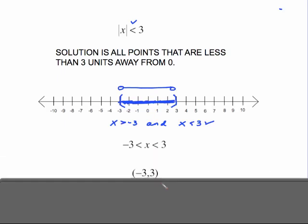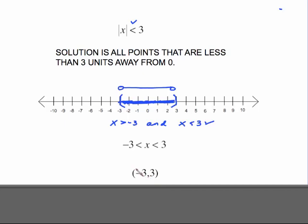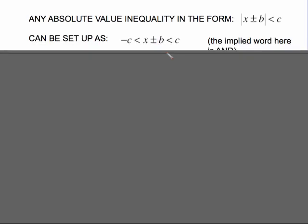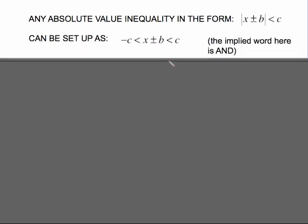The interval notation is simply the parentheses from negative three to three. So any absolute value inequality in the form of absolute value of (x ± b) less than c can be set up this way: whatever is inside the bars goes in the middle, with negative c on the left side and positive c on the right side, both with less than signs. The implied word here is 'and' — it means negative c is less than (x + b) and at the same time (x + b) is less than c.